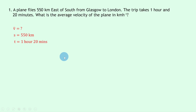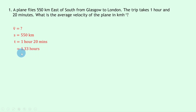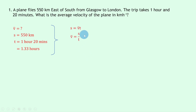The time t is equal to one hour and 20 minutes, and we want to get the units into one consistent unit. Because we're thinking about kilometers and we want a value for average velocity in kilometers per hour, we're going to convert the time into just hours. Remember, 20 minutes is a third of an hour, so we can rewrite this as a decimal: 1.33 hours. Writing down our equation for average velocity, we have s equals v-bar times t.